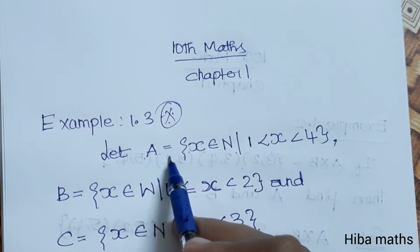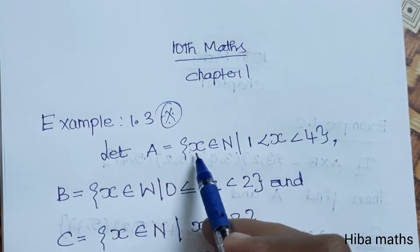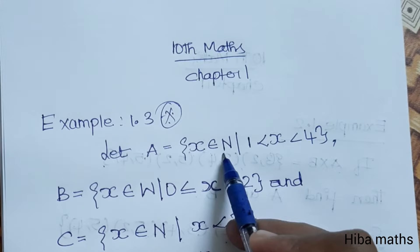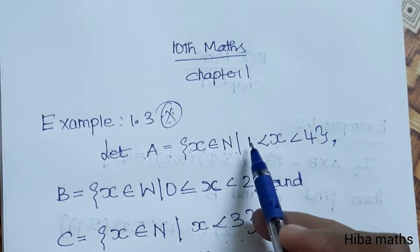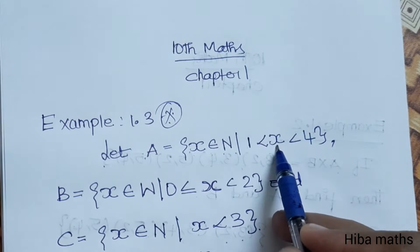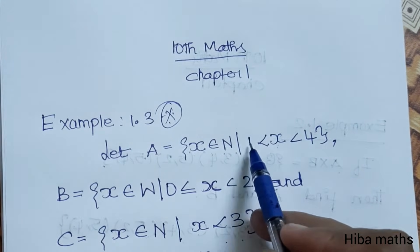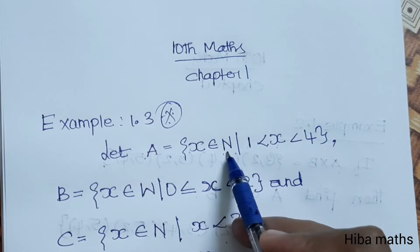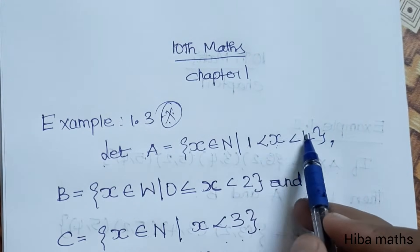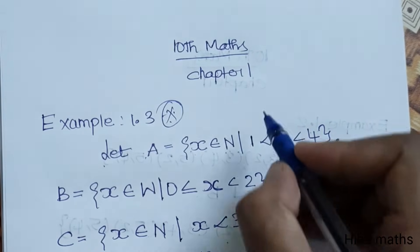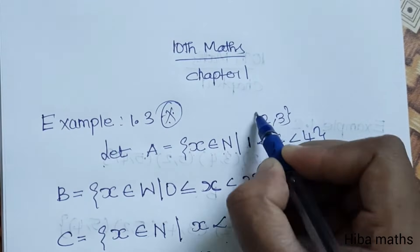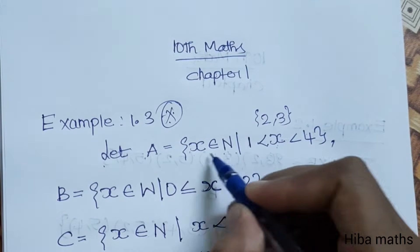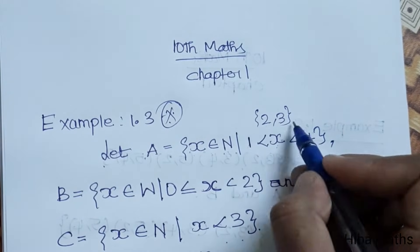Let A be equal to x, where x is an element of natural numbers, x is greater than 1 and less than 4. If x is a natural number and 1 is less than x less than 4, then x can be 2 or 3. So A = {2, 3}.